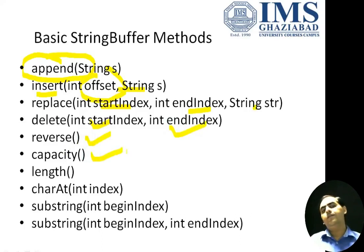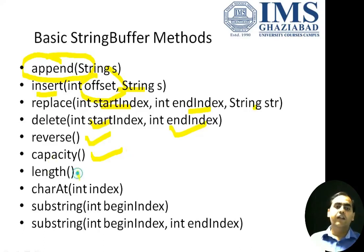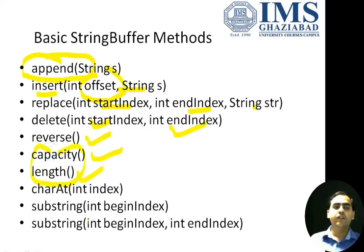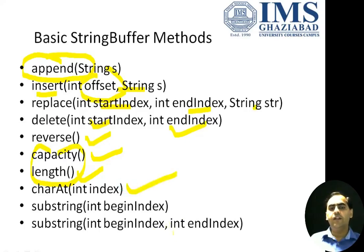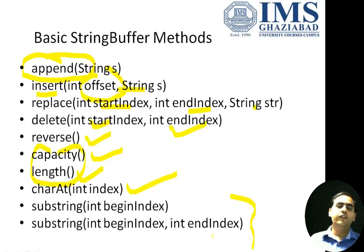The capacity method returns the total number of characters that can be stored in a StringBuffer. The length method returns the actual number of characters currently stored in the StringBuffer. The charAt method is similarly used to find the character at a given index. You can also find a substring in StringBuffer the same way as in the String class.